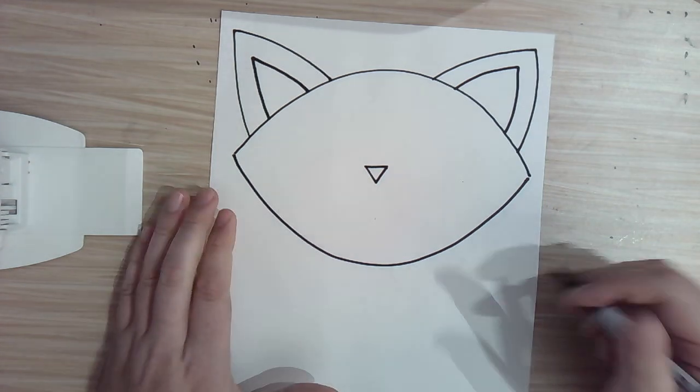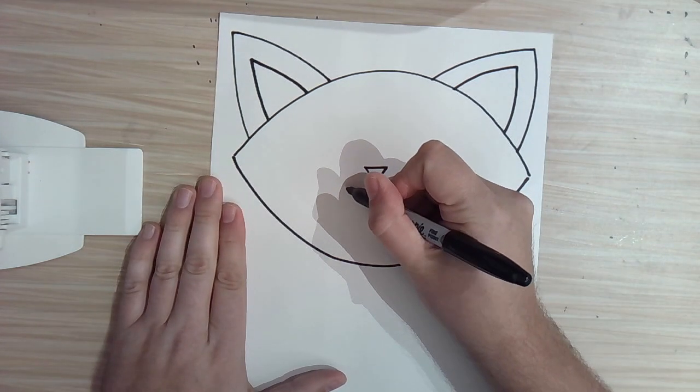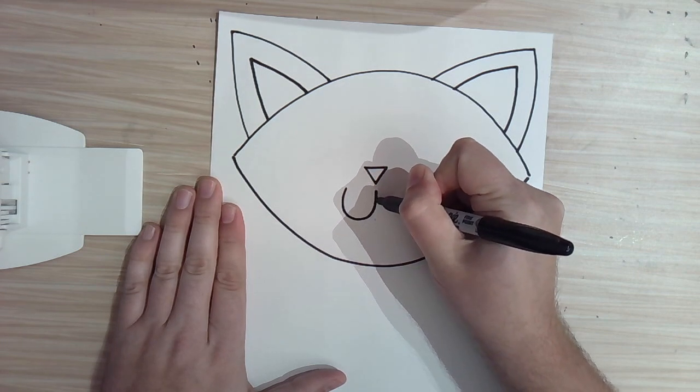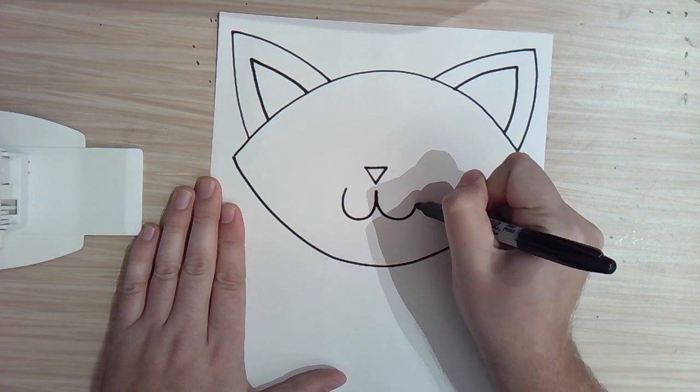For the mouth of your kitten, let's do the letter W. So W, where the middle comes up toward the nose. And then another W.